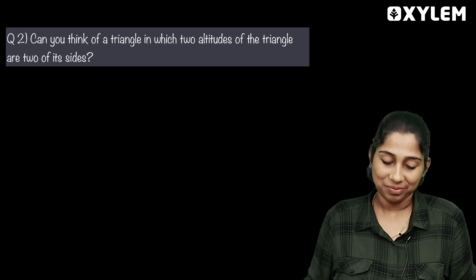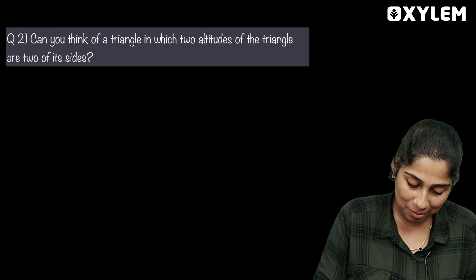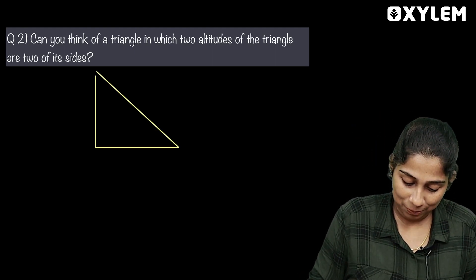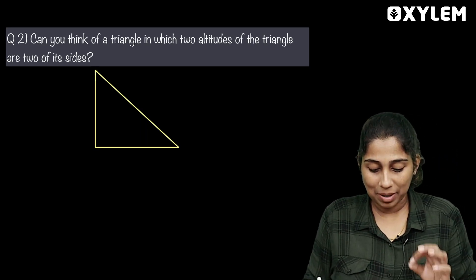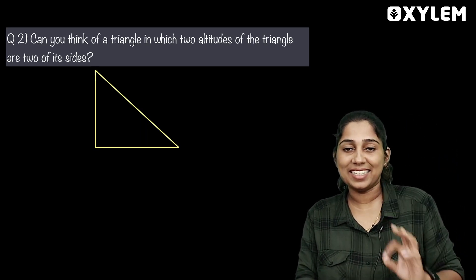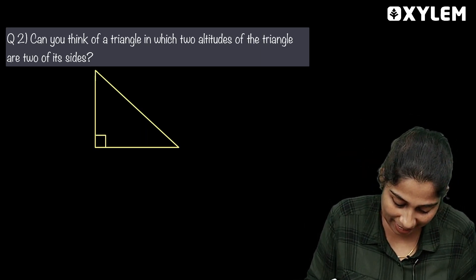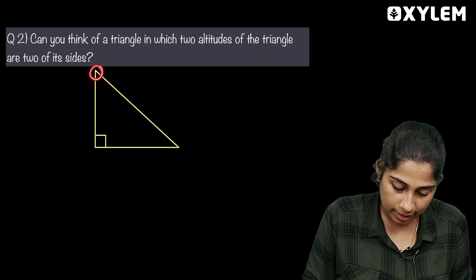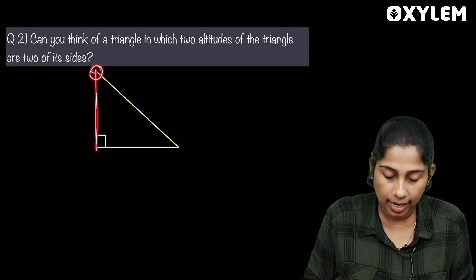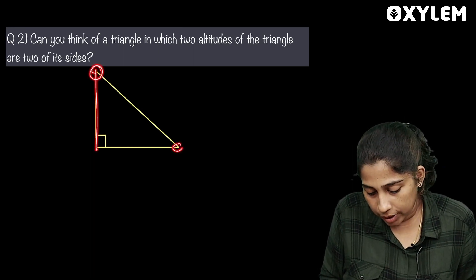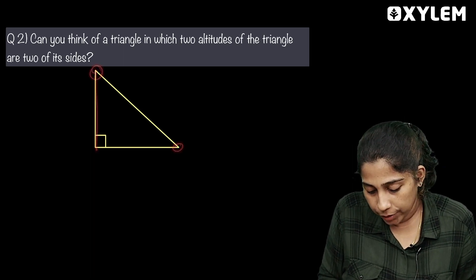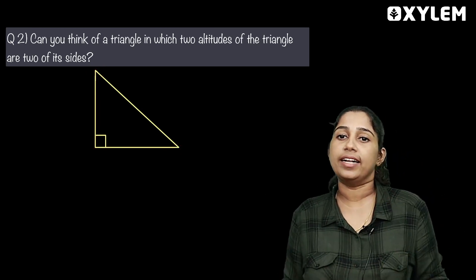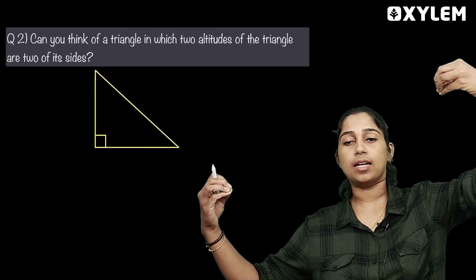It is a right angle triangle. If we have a right angle triangle, it is 90 degrees. The two sides around the right angle of the triangle serve as the two altitudes.